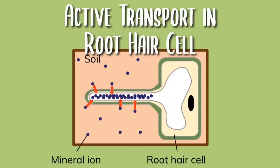Here's an example of active transport in the root hair cell. As you can see, the mineral ions in the soil are not as concentrated as the mineral ions in the root hair cell. So due to active transport, the mineral ions move into the root hair cell.